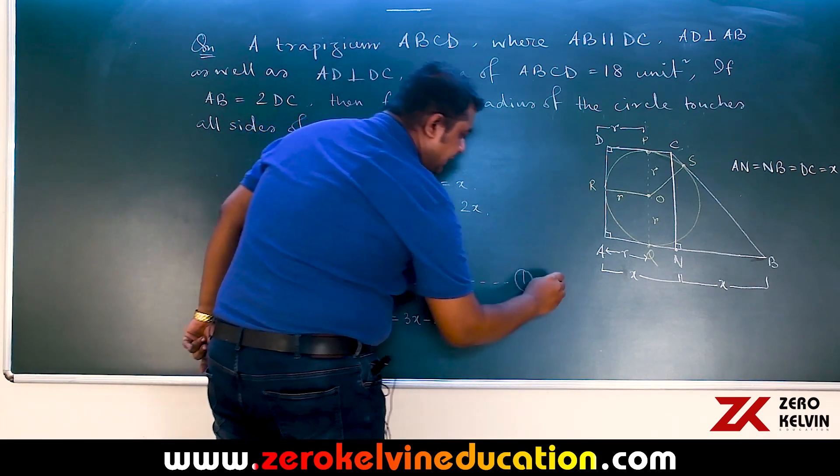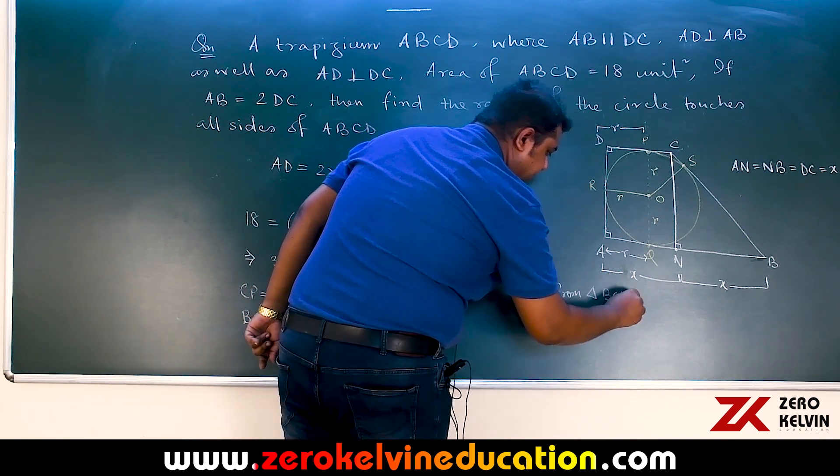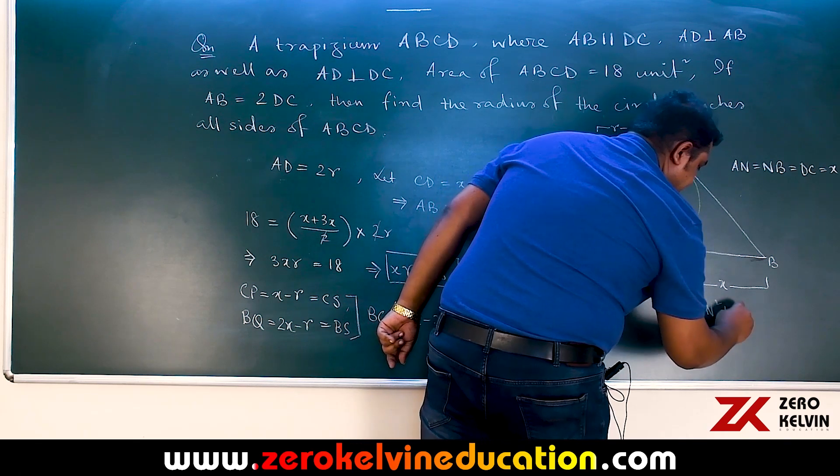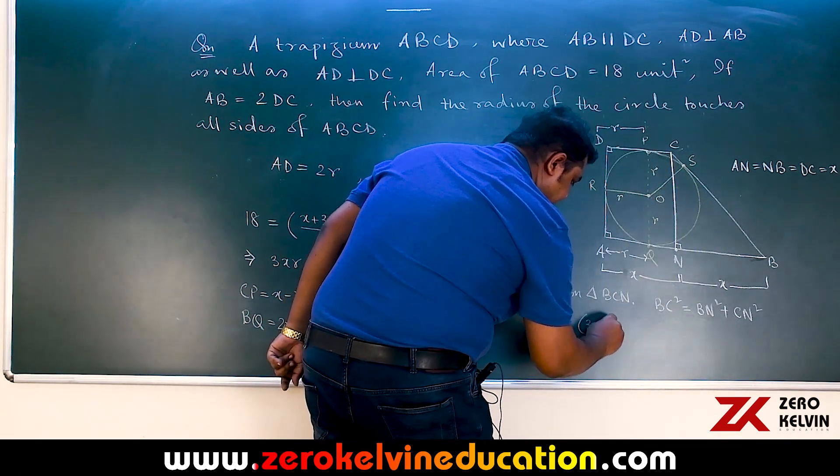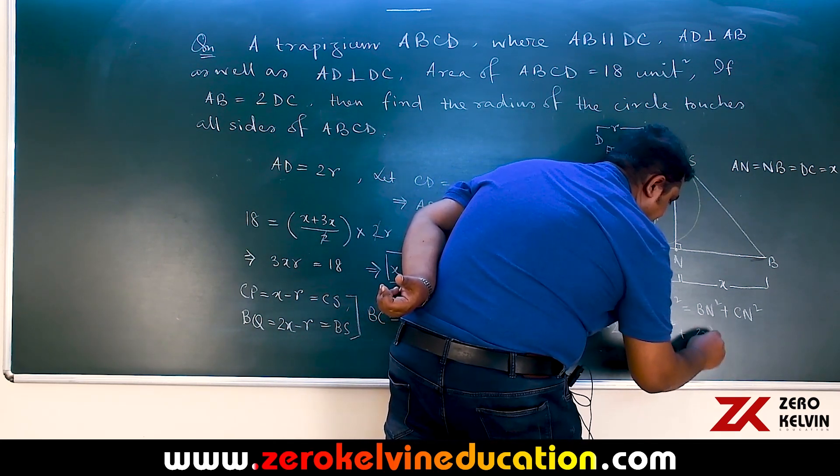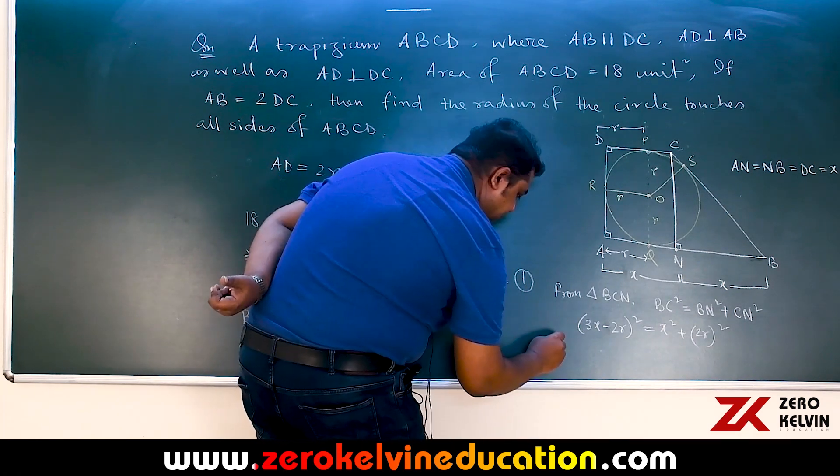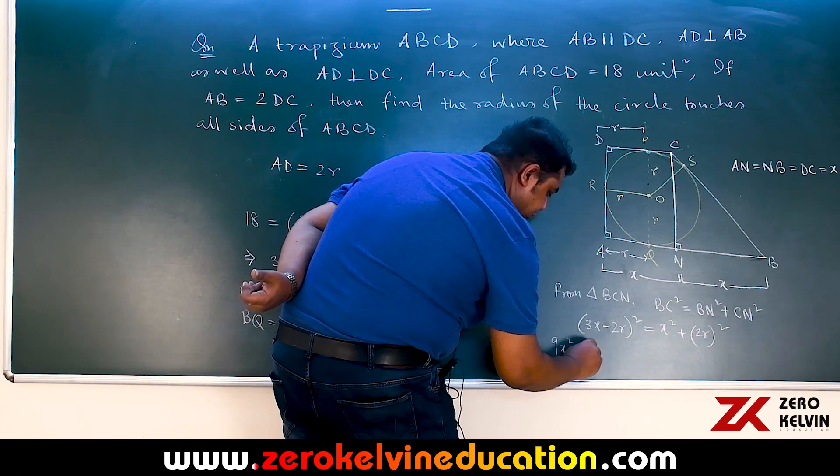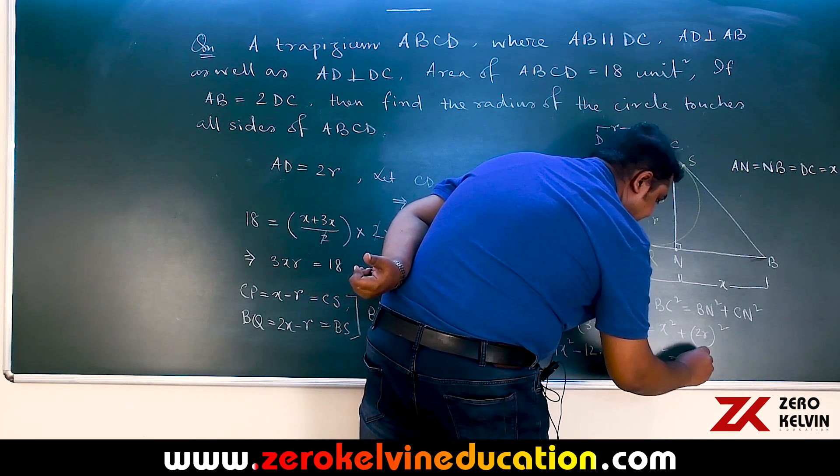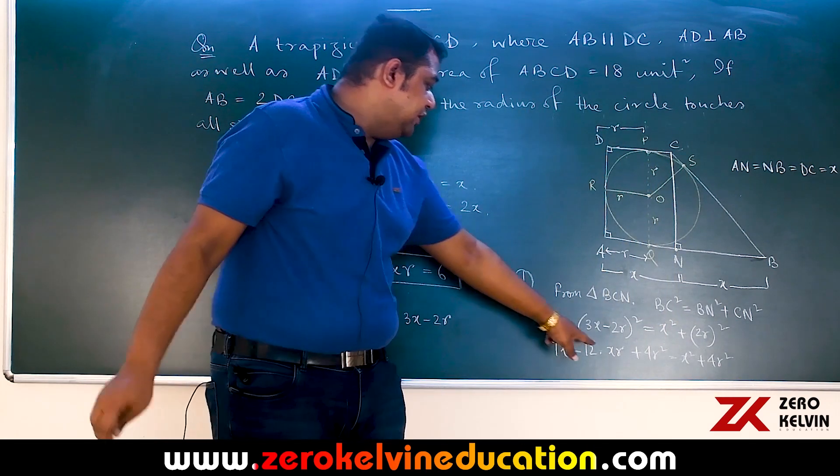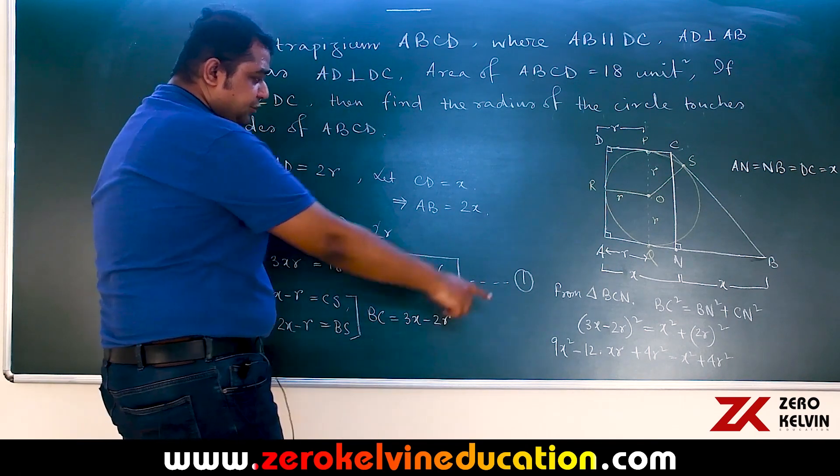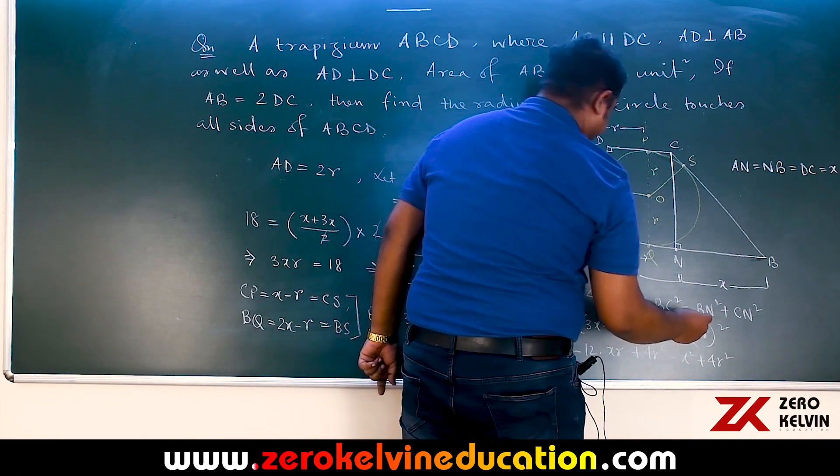From triangle BCN we know that BC square equals BN square plus CN square, that is (3x minus 2R) whole square is x square plus (2R) whole square. If we open this up it is 9x square minus 12xR plus 4R square equals x square plus 4R square. We already know the value of xR by relation 1 which is 6. Now let us just substitute that. It gives us 8x square balancing this x square terms.